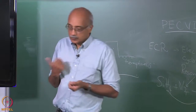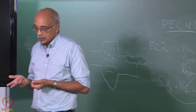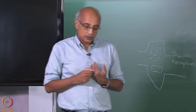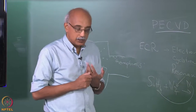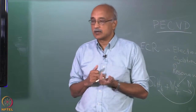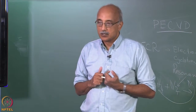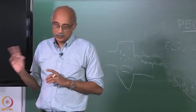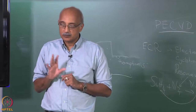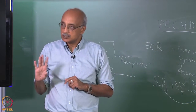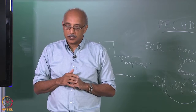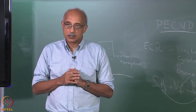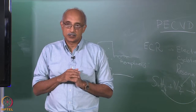So we have talked about atmospheric pressure CVD, low pressure CVD, and plasma enhanced CVD today. In the next lecture we will talk a little bit more about metal CVD as well as metal organic CVD reactors, which are two other important classifications of CVD reactors. With the discussion of those two, we would have covered the five most widely used CVD reactors in the world, and after that we will start looking into some of the process parameters in more detail.